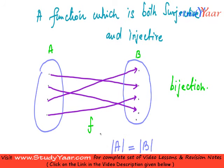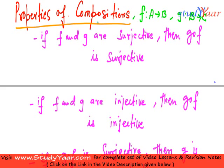But in a bijection, this is going to hold always. Now let's look at some properties of compositions that we have.